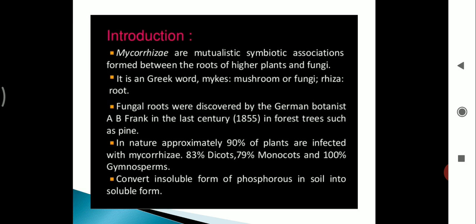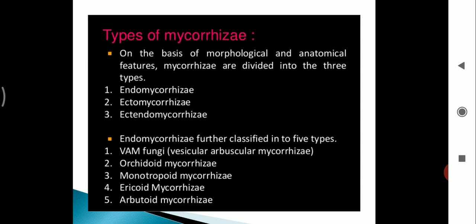Mycorrhizae are mutualistic symbiotic associations formed between the roots of higher plants and fungi. It is a Greek word: myco means mushroom or fungi, rhiza means root. Fungal roots were discovered by the German botanist A.B. Frank in the last century in forest trees such as pine. In nature, approximately 90% of plants are infected with mycorrhizae: 83% dicots, 79% monocots, and 100% gymnosperms. They convert insoluble forms of phosphorus in soil into soluble form.